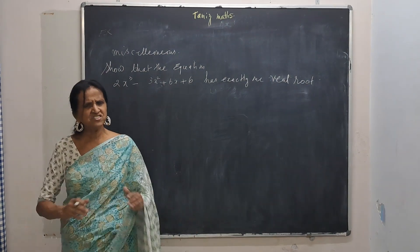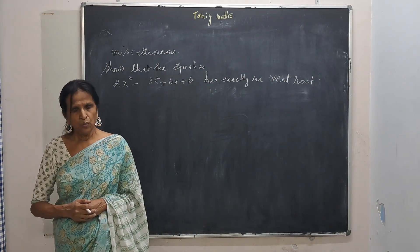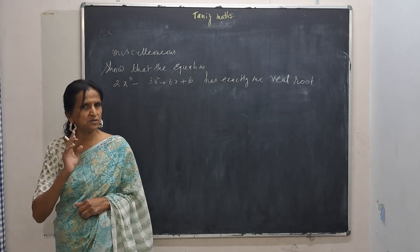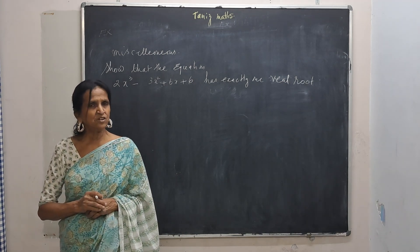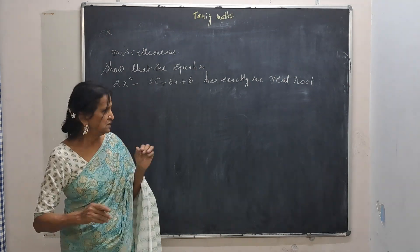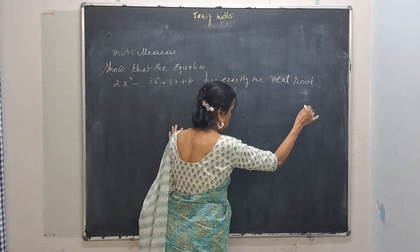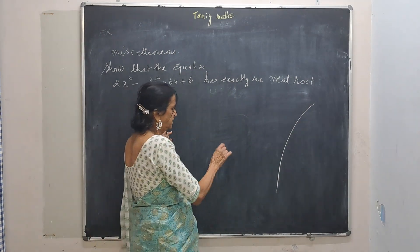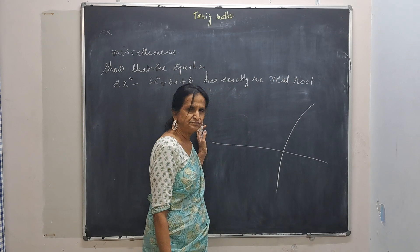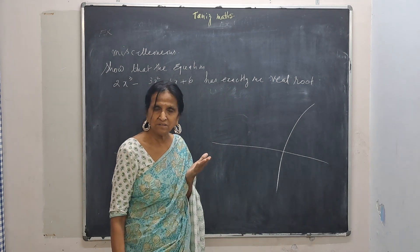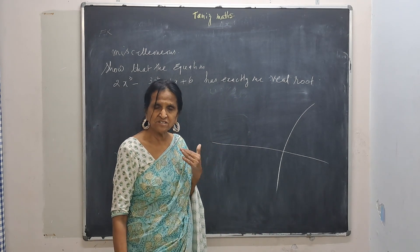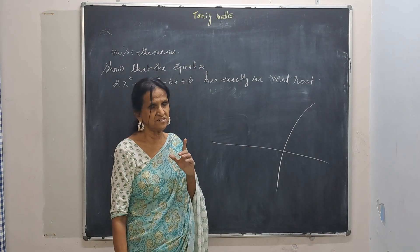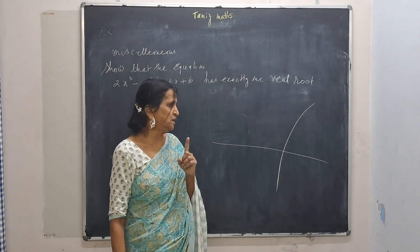Whenever a function is increasing, there is just one root, because it will cross the axis only once. A function that is increasing always goes upward — it will cross the axis only once and won't come down to cross again. So, when a function is strictly increasing, there is only one real root.